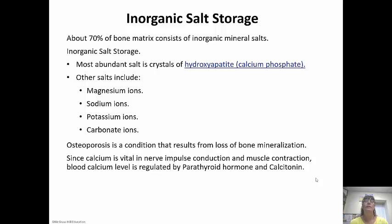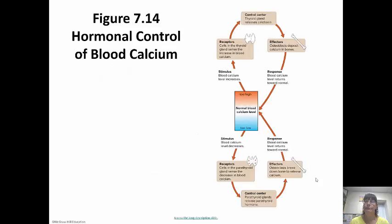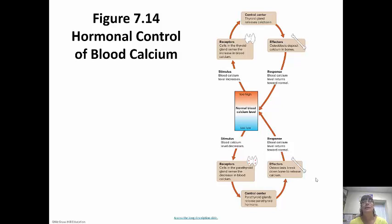If blood calcium gets too high, receptors in the thyroid gland sense this and the thyroid releases calcitonin, which stimulates osteoblast activity so calcium is deposited into bone and removed from the blood, returning levels to normal. If blood calcium gets too low, receptor cells in the parathyroid gland pick this up, and the parathyroid glands release parathyroid hormone — the antagonist to calcitonin. This stimulates osteoclast activity to break down bone and release calcium into the blood, raising blood calcium back up.